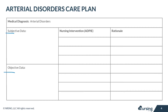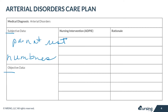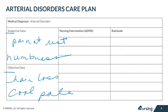Remember, subjective data are going to be things that are based on your patient's opinions or feelings. These things might include intermittent claudication, pain at rest that awakens them at night, or numbness and tingling. Objective or visualizable measurable data in your patient may include hair loss on the extremity, cool, pale skin.